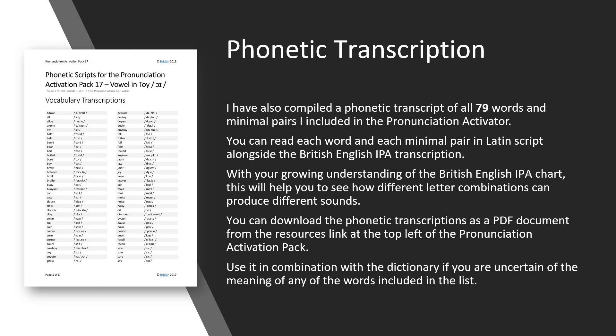Phonetic Transcription. I have also compiled a phonetic transcript of all 79 words and minimal pairs included in the Pronunciation Activator. You can read each word and each minimal pair in Latin script alongside the British English IPA transcription. With your growing understanding of the British English IPA Chart, this will help you to see how different letter combinations can produce different sounds. You can download the phonetic transcriptions as a PDF document from the resources link at the top left of the Pronunciation Activation Pack. Use it in combination with the dictionary if you are uncertain of the meaning of any of the words included.